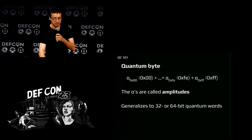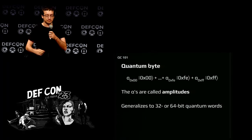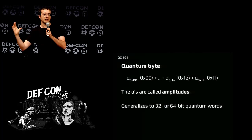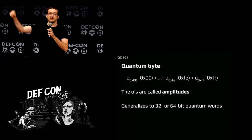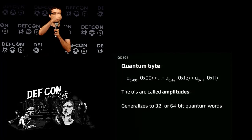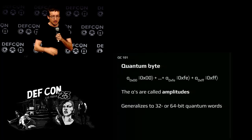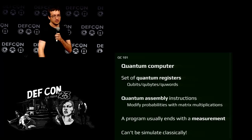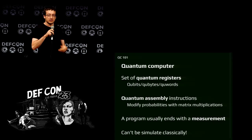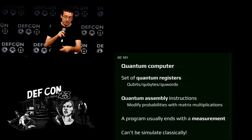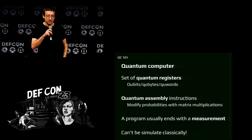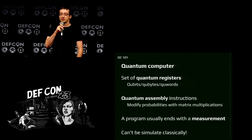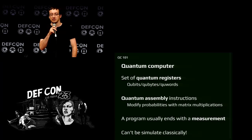You can generalize this idea to quantum bytes — instead of one bit, you have 8 bits. A sequence of 8 quantum bits might be 0xFF with some probability, 0x01 with another, and never 0x00. You can generalize to quantum words of 64 bits or any number. Using these objects you build a quantum computer — it's like a normal computer with registers, and you transform the state. You have a kind of quantum assembly with different instructions than the classical ones you know.